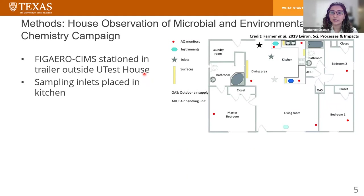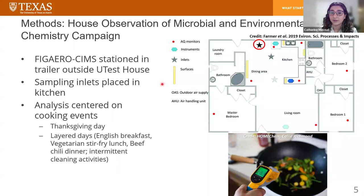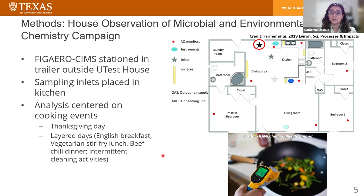The FIGAERO-CIMS was stationed in one of the dedicated aerosol trailers outside the test house, with the sampling inlets placed inside the kitchen. For this work, we chose to focus our analysis on cooking events — specifically two kinds of experiment days. First was a simulated Thanksgiving day where we roasted a whole turkey in the oven and made a number of Thanksgiving side dishes. Second, we looked at the layered days, which had a combination of cooking, cleaning, and occupancy activities: an English breakfast, a vegetarian stir fry, a beef chili dinner, and intermittent cleaning activities.